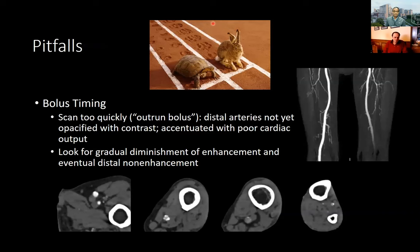Some pitfalls when interpreting runoffs relate to contrast timing. Despite efforts with bolus tracking, it is possible to outrun the bolus — essentially scanning before contrast has reached that anatomic level. This occurs more frequently in patients with poor cardiac output. One way to recognize this is that contrast gradually becomes less dense, which is really not the pattern of thrombosis. We address this by routinely obtaining the delay from the knees to the toes, because that's typically the region most commonly affected by outrunning the bolus.